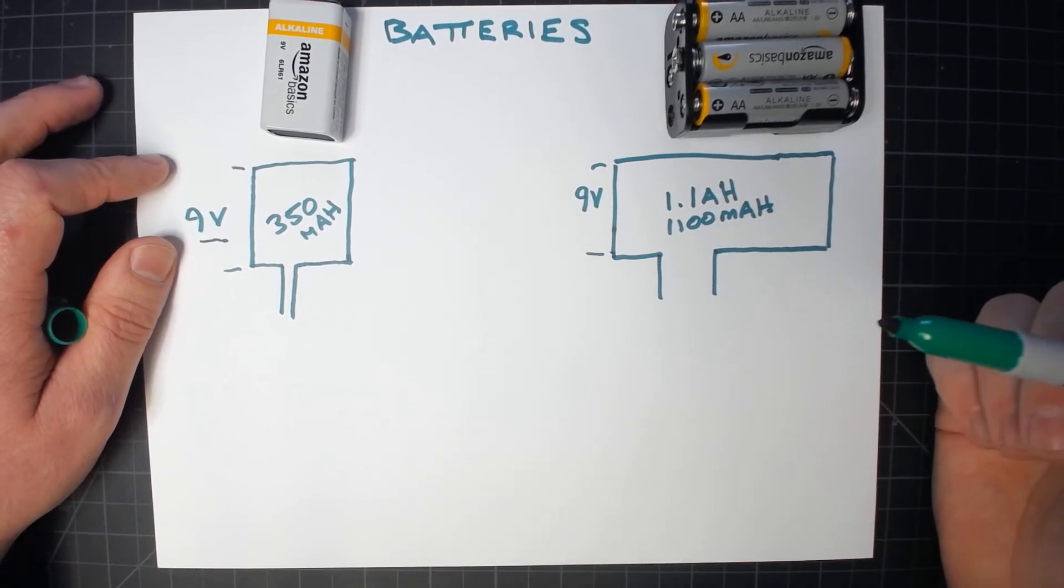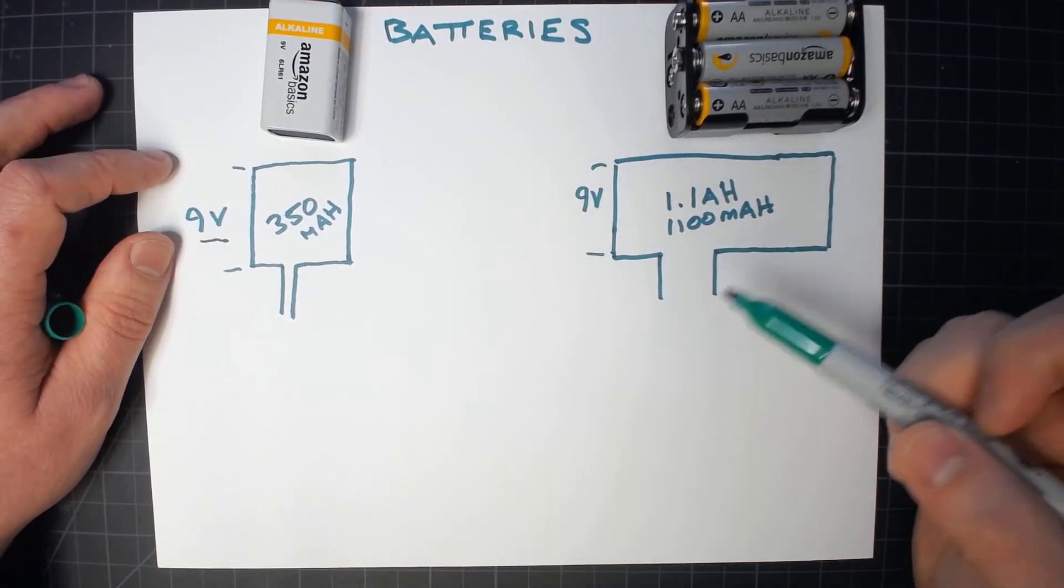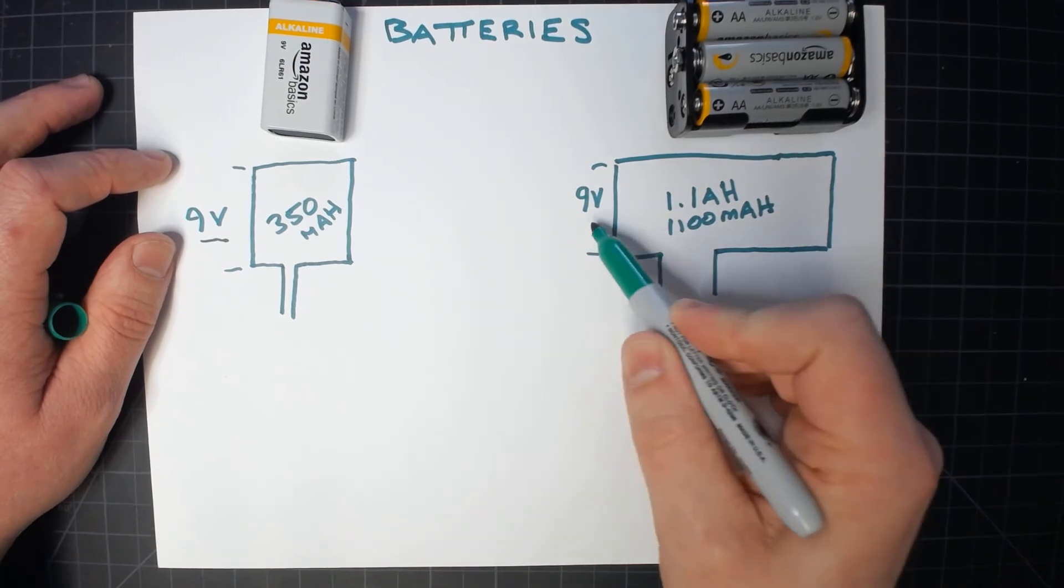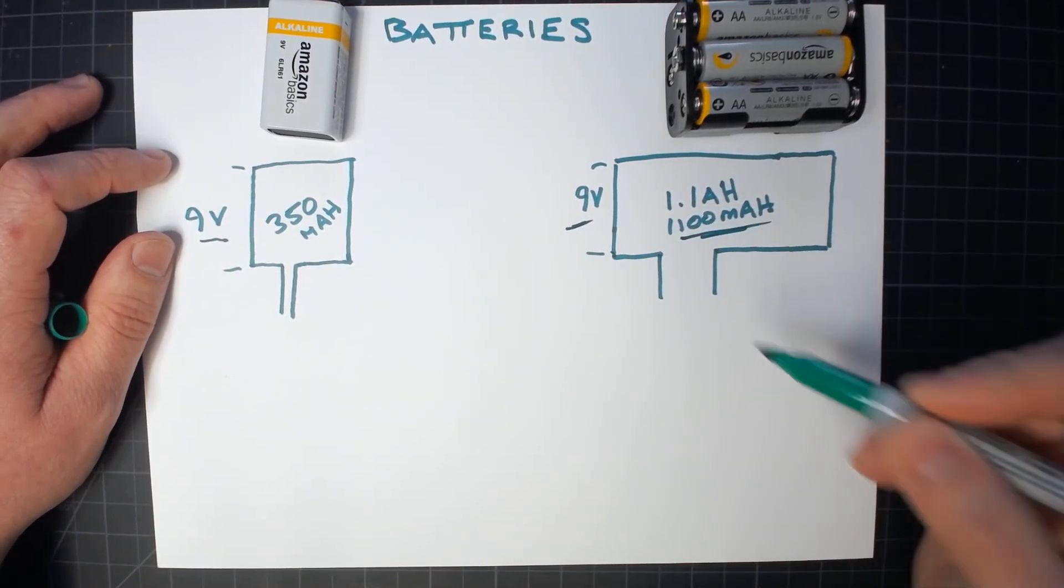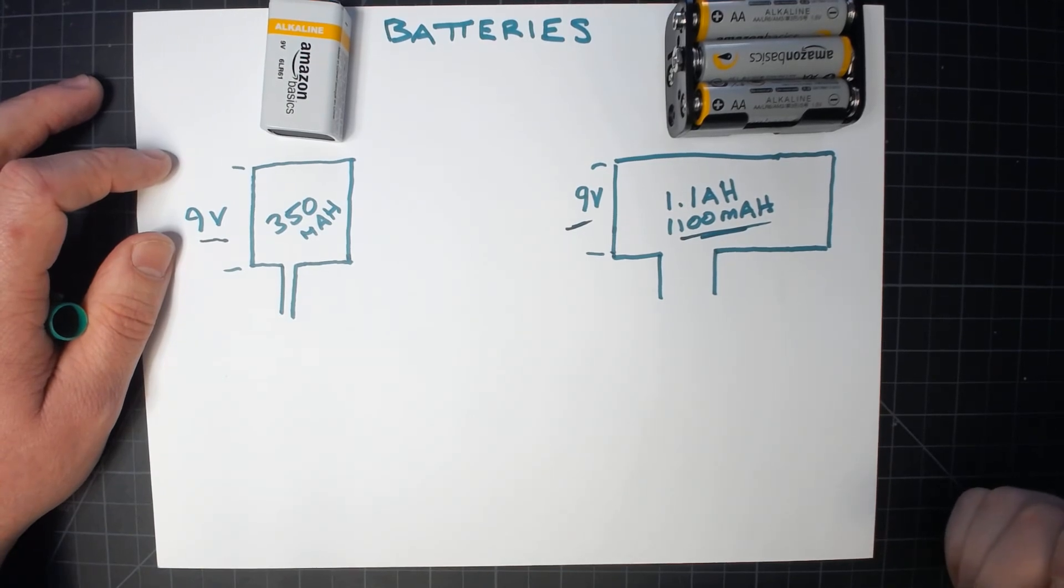So when you're choosing your battery for whatever you're trying to power, you want to make sure that it has the right voltage, a suitable capacity, and that it's able to deliver the amount of current you need.